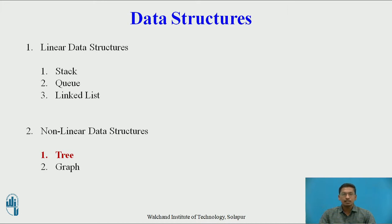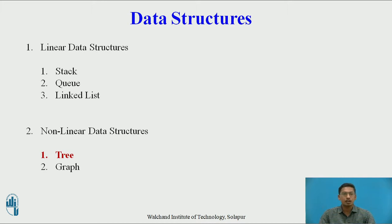Now for some background before we start: there are two types of data structure. Data structure is nothing but the organization of data so that we can insert, search, or access the data easily. There are majorly two types: the first one is linear data structure, in which each element has only one successor and only one predecessor.